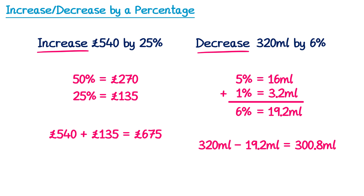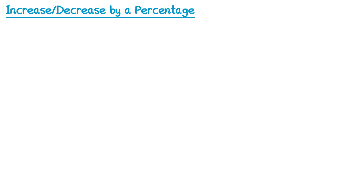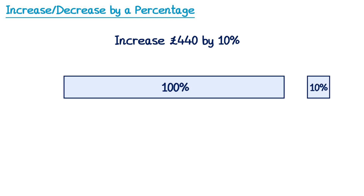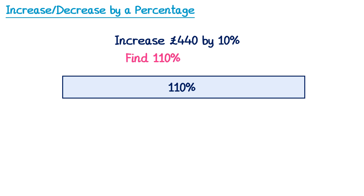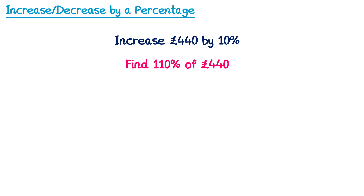The approaches we've used so far are non-calculator ones. Let's look at how we could use a calculator for percentage increases and decreases. Returning to the original question — increase £440 by 10% — we took 100% and added 10% to get 110%. So another way of thinking about this is: find 110% of £440. We take 110, divide by 100 to get 1.1, then multiply by £440, giving 484.